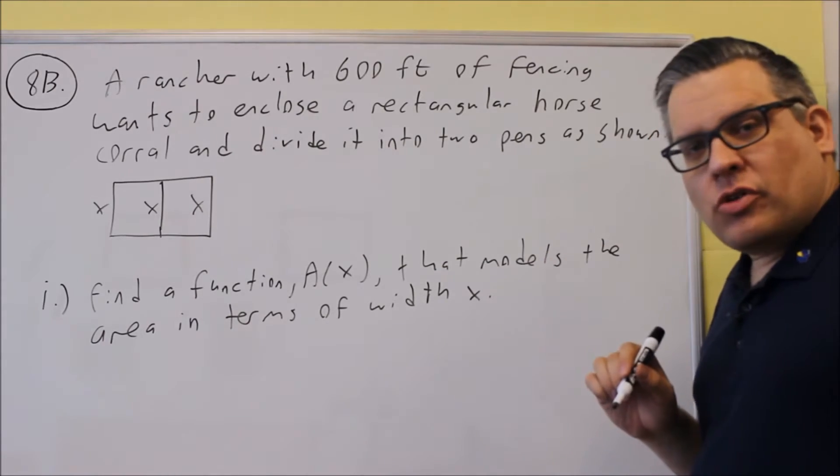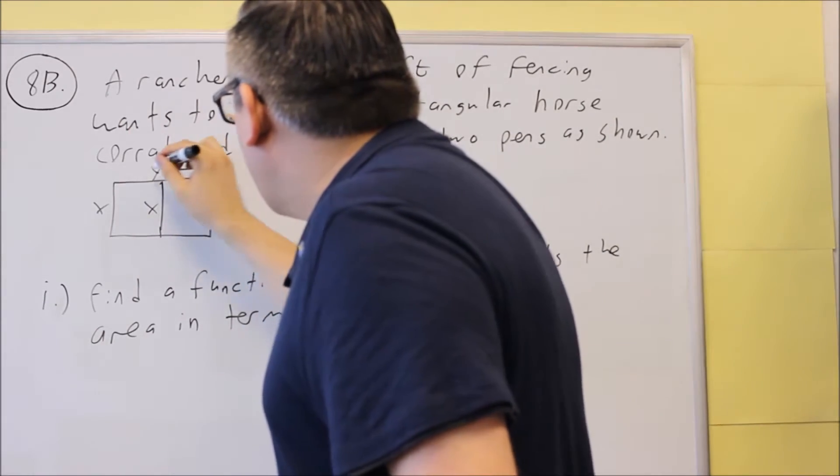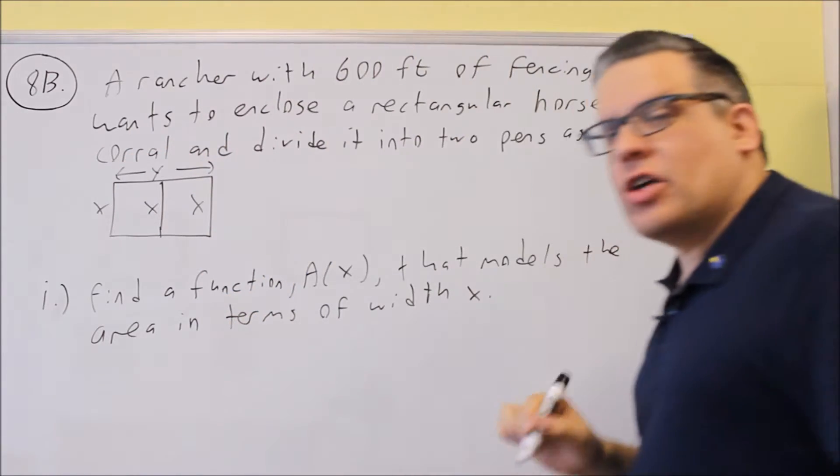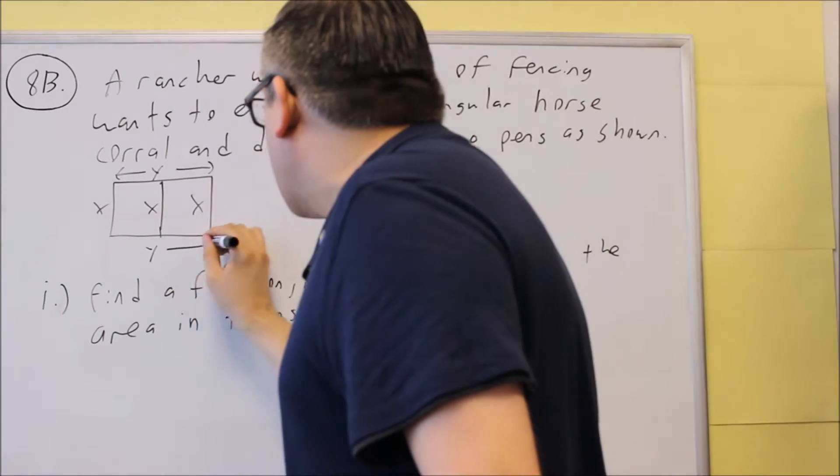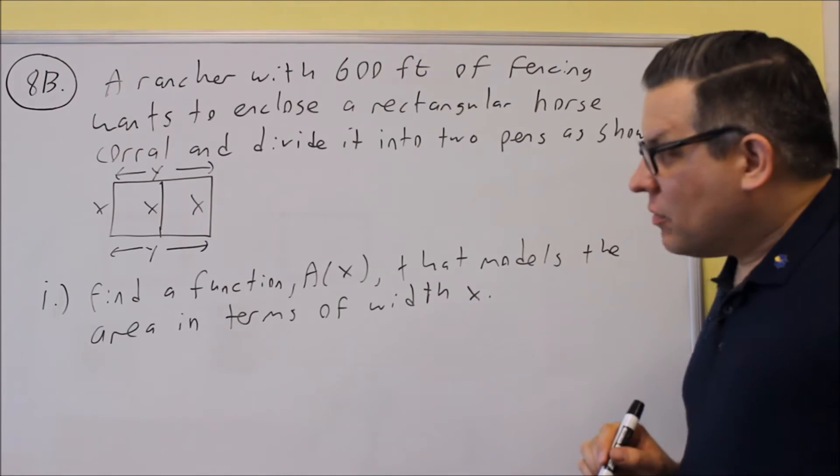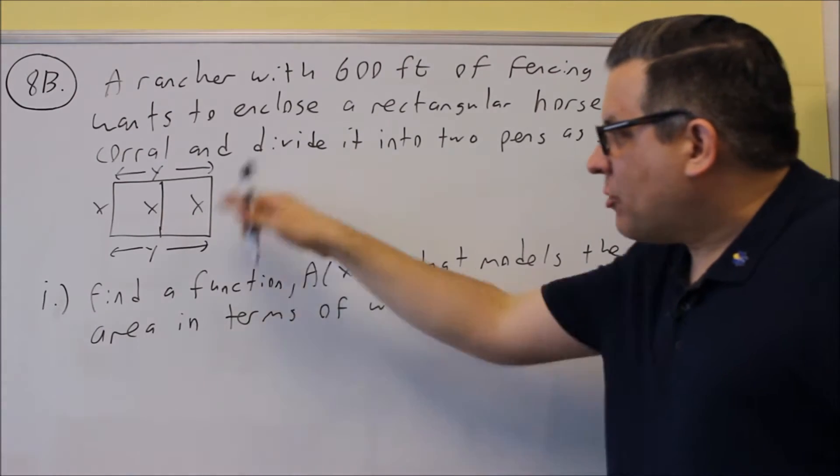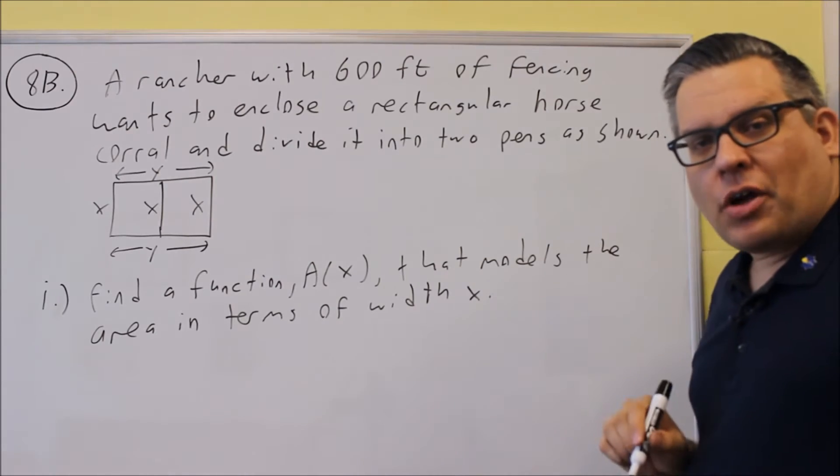Now, the other variable we use, we can use y, and I'll use y for the other length here. If you wanted to use w for width and l for the length, that's okay as well. But I'm just going to use x's and y's since it's a variable that we're familiar with working with. So now every single side is labeled with something.